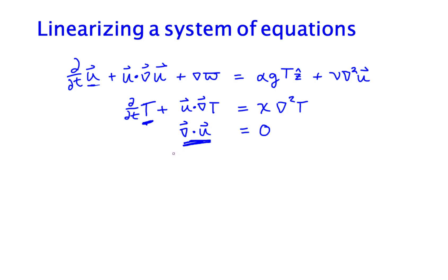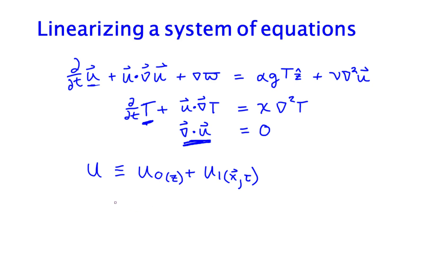So how do we linearize this set of systems? We linearize it in the same way that we linearized the temperature equation. We start by taking our u and defining it into a decomposition: u0 plus u1. Remember u1 is of x and t, and u0, if of anything, is of maybe just a single coordinate z. We define a t of t0 and t1, just as before.